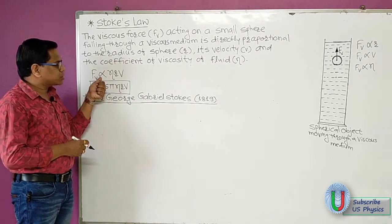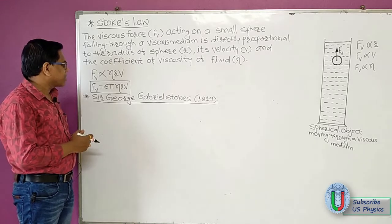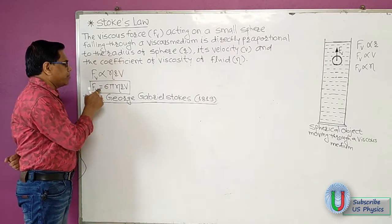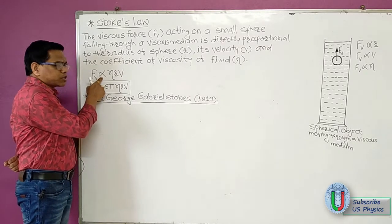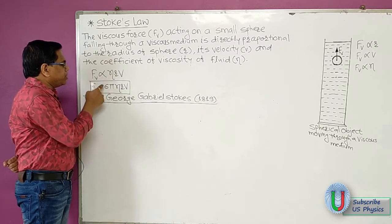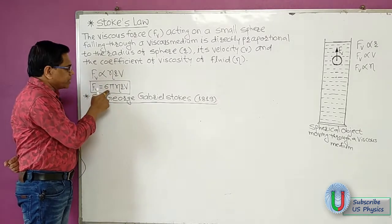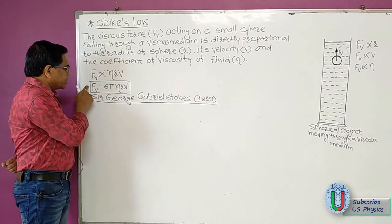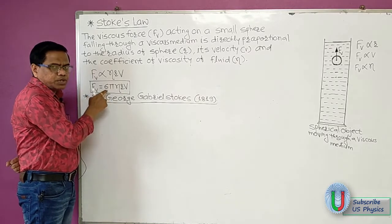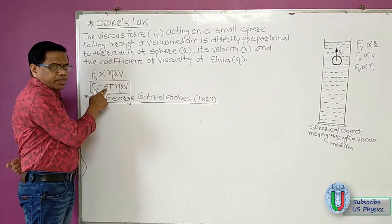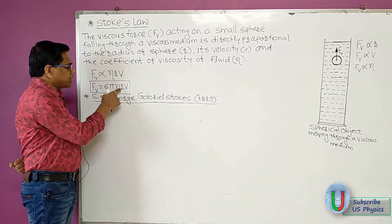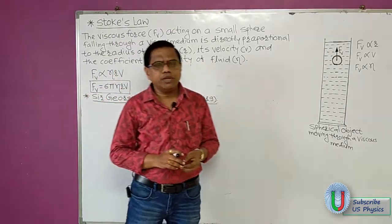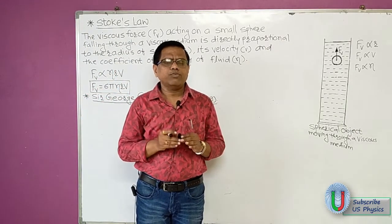To remove the proportionality sign, we introduce a constant. Empirically, the value of this constant is found to be 6π. So we get Stokes' law as: the force due to viscosity acting on a sphere falling through a viscous medium equals 6π × η × R × V, where V here is the terminal velocity. Let us now derive an expression for terminal velocity.